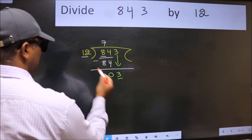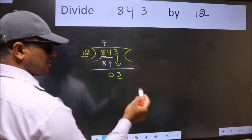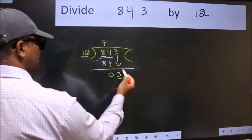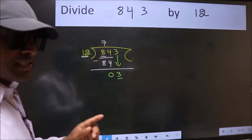Here we have 3 and here 12. 3 is smaller than 12. So what many do is they directly put a dot and take 0, which is wrong. Why is it wrong?